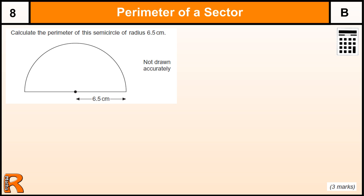Okay, perimeter of a sector. Well, it's actually a semicircle, so not quite as hard as a sector, but I'll put that under as a grade B.